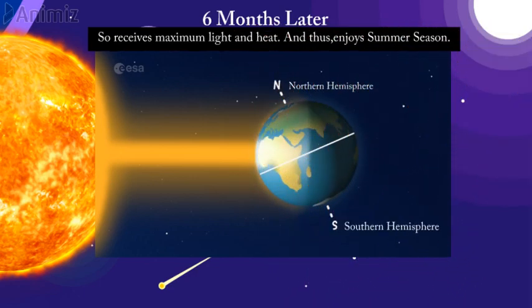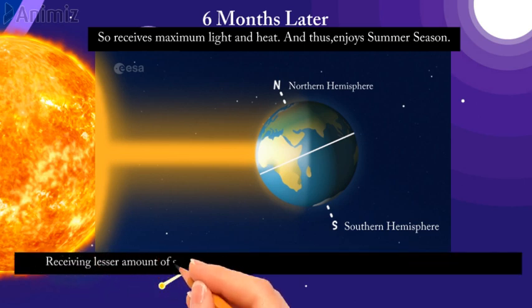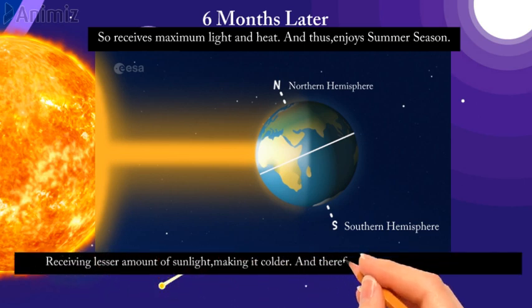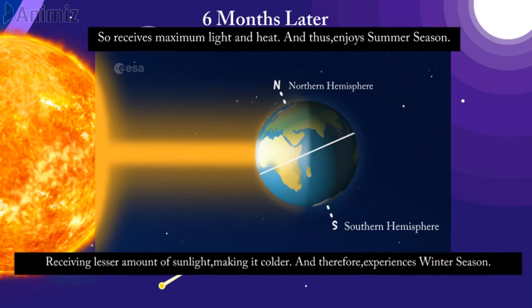While the southern hemisphere which is tilted away from the sun is receiving lesser amount of sunlight making it colder and therefore experiences winter season.